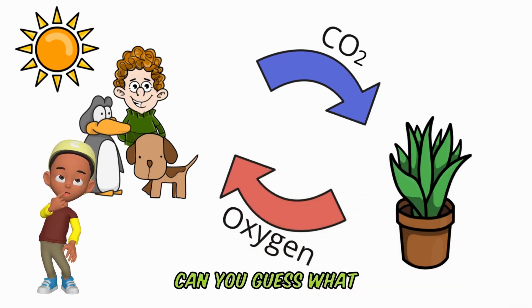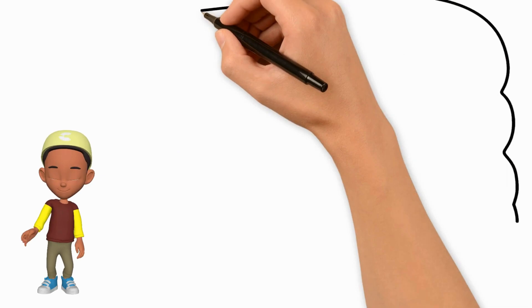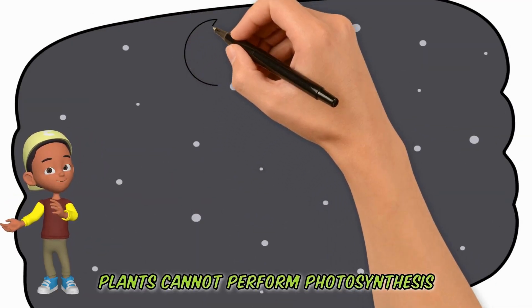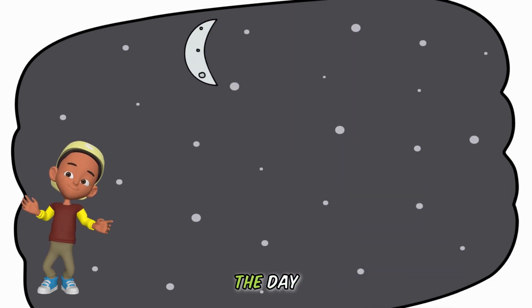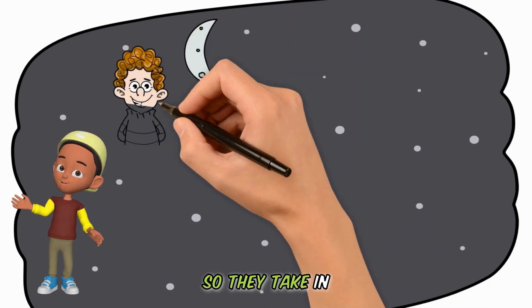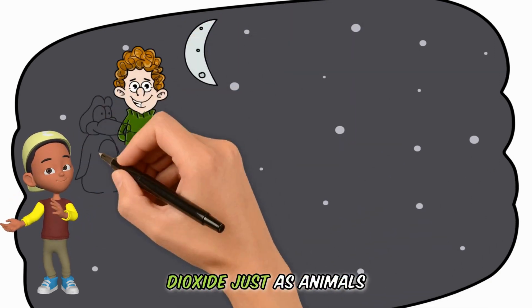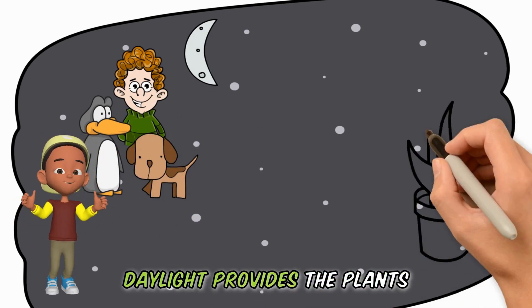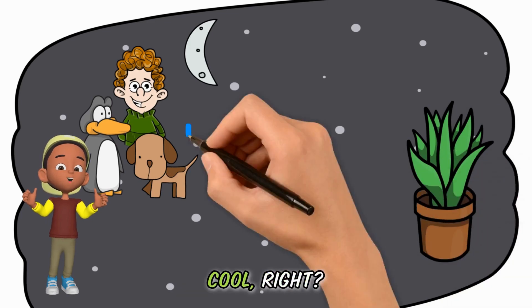Can you guess what happens at night? At night, since there's no sunlight, plants cannot perform photosynthesis as they do during the day. So they take in oxygen and release carbon dioxide, just as animals do. The sugar produced during daylight provides the plants with energy at night. Cool, right?